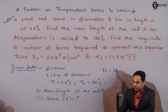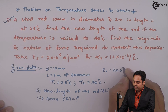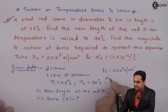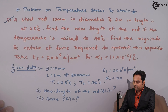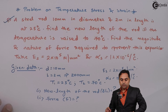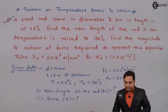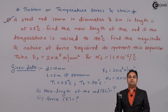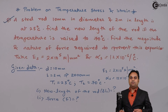The material properties given are: Young's modulus E = 2 × 10^5 N/mm², and the coefficient of thermal expansion and contraction, Alpha.